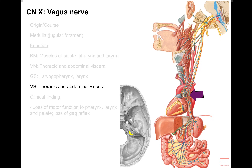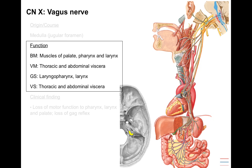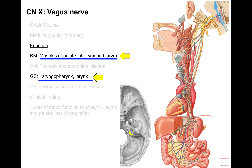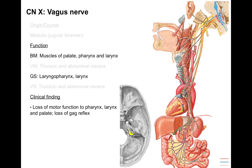It also carries visceral sensation from thoracic and abdominal viscera. The most clinically relevant functions are muscles of the palate, pharynx, and larynx for swallowing and speaking — very important on physical exam — and general sensation from the laryngopharynx and larynx, because without it people can asphyxiate on fluids touching the top of the larynx. Visceral motor to thoracic and abdominal viscera is less critical clinically because the enteric nervous system can run on its own. The key clinical finding is loss of motor function to the pharynx, larynx, and palate, assessed via the gag reflex.